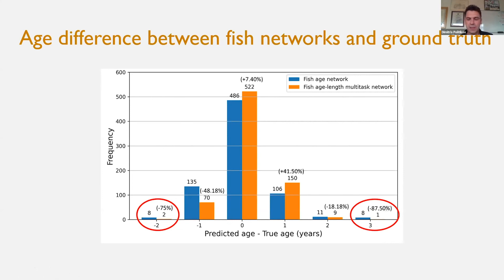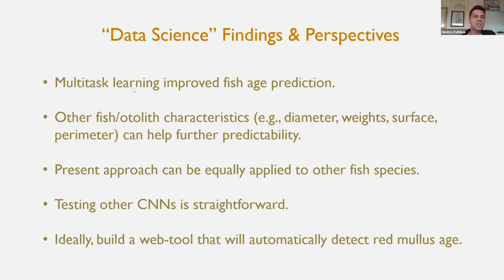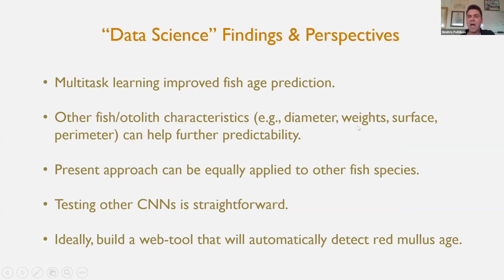Overall, this represents a first step towards automatic fish age prediction from otolith images. Multi-task learning worked well — fish length proved a useful auxiliary task, while fish weight, gender, and other attributes did not improve results. Multi-task learning with fish length seems promising for improving fish age prediction. We also propose exploring other otolith characteristics such as diameter, weight, surface, or perimeter as potential auxiliary tasks. This is a generic approach that can be equally applied to other species where fish otolith images are available.